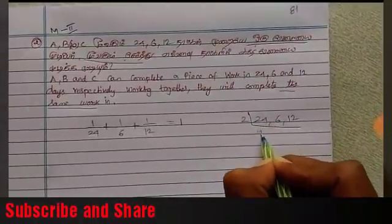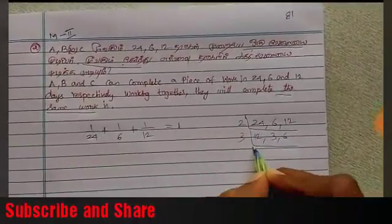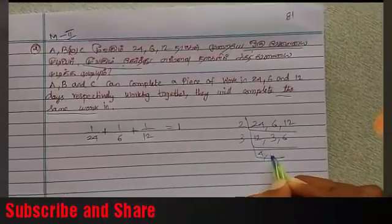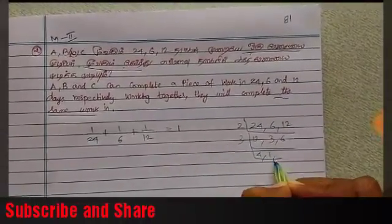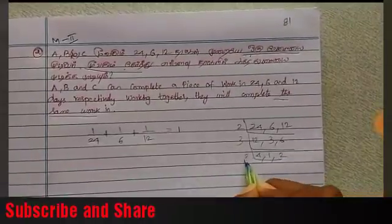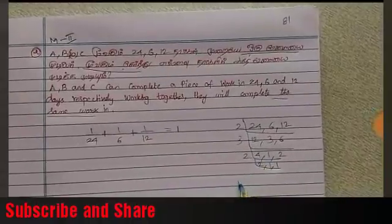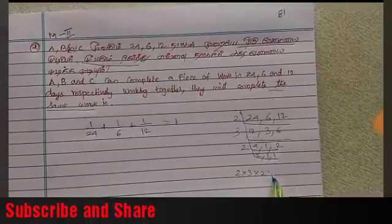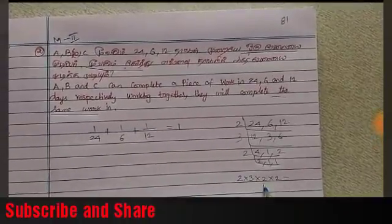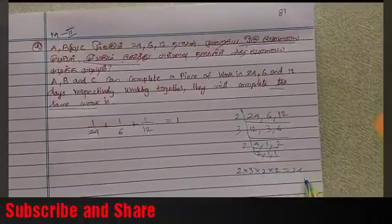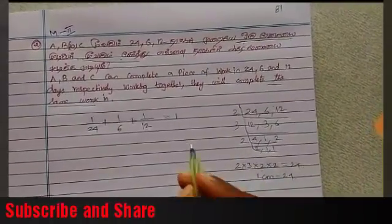To find the LCM, if I have 24, 6, and 12, I divide by 2: 12, 3, 6. Divide by 3: 4, 1, 2. Divide by 2: 2, 1, 1. Then multiply the numbers: 2 into 3 into 2 into 2 equals 24. So the LCM is 24.